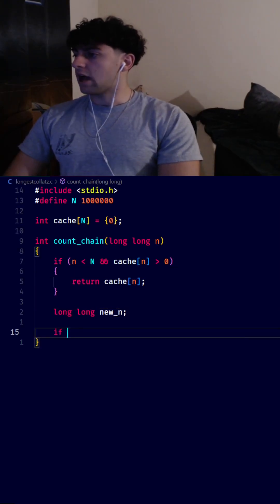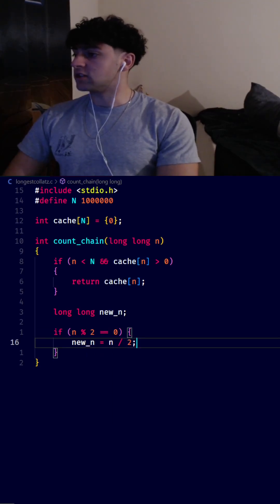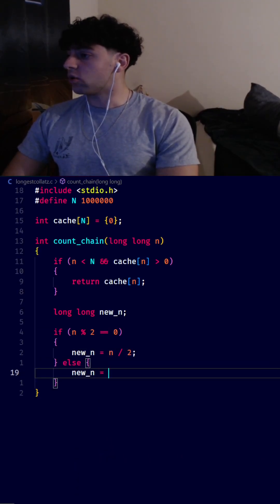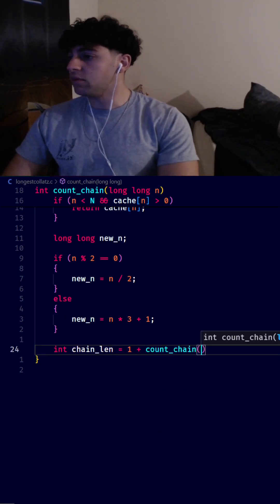Now we'll need a variable called new_n. And we'll check if n is even. Then we'll set new_n equal to n divided by 2. Otherwise, new_n is going to equal n times 3 plus 1. Now we'll type int chain_len is going to equal 1 plus count_chain with new_n.